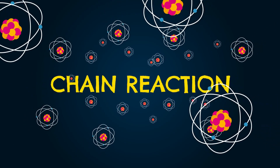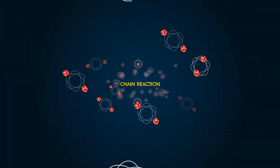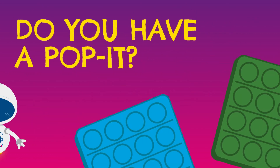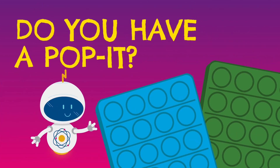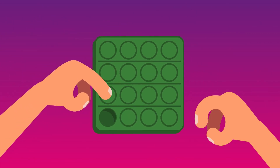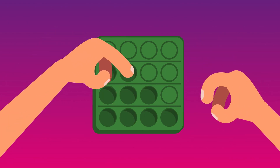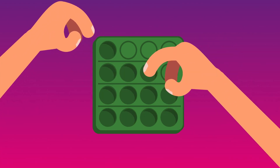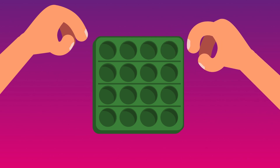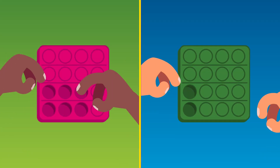And the more atoms split, the faster the reaction becomes, creating more heat. Do you have a pop-it? It works a bit like a chain reaction. Start with one pop, then pop all those around it. Do that until you reach the edge, then the popping stops. Try having a pop-it chain reaction race against a friend.